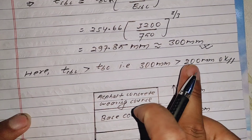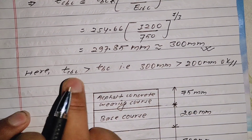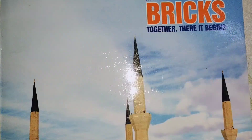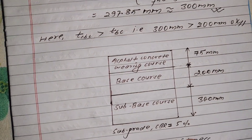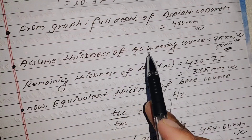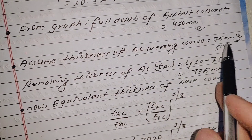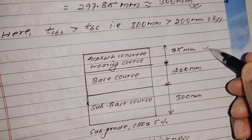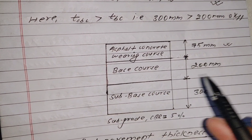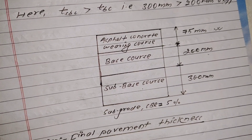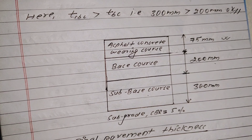Final pavement thickness summary: asphalt concrete wearing course = 75 mm, asphalt concrete base course (bituminous treated base) = 200 mm, granular sub-base course = 300 mm, subgrade. The CBR of subgrade is as given. This is the final pavement design diagram using the Asphalt Institute method.